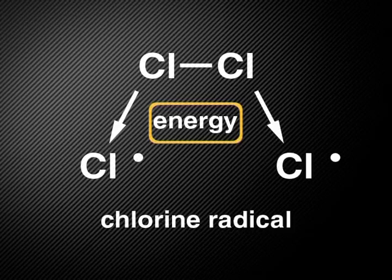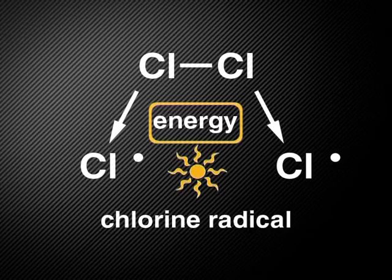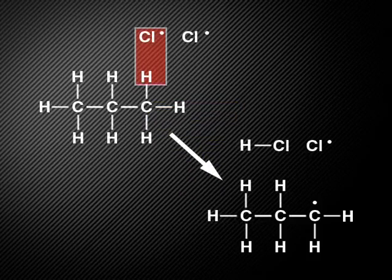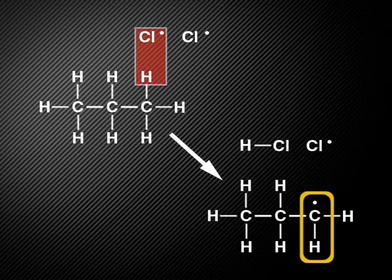When energy from UV light is supplied, it gives chlorine enough energy to break up. The UV light comes from ordinary sunlight. The two separated chlorine atoms become radicals — that means that one electron from the electron pair that makes the bond is found on each chlorine atom. One of these chlorine radicals makes a new bond with a hydrogen atom on the hydrocarbon, leaving an open bonding site on the carbon, which now becomes a carbon radical.